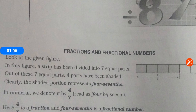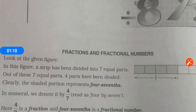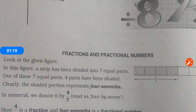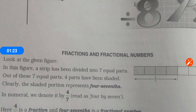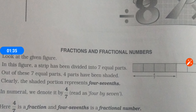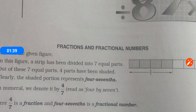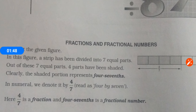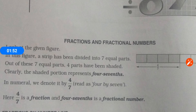Look at the given figure. A strip has been divided into seven equal parts. Out of these seven equal parts, four parts have been shaded. Clearly, the shaded portion represents four-sevenths. The shaded part is four and the total number of parts is seven, so we get four upon seven. In numerals, we denote it as 4/7, read as four by seven.